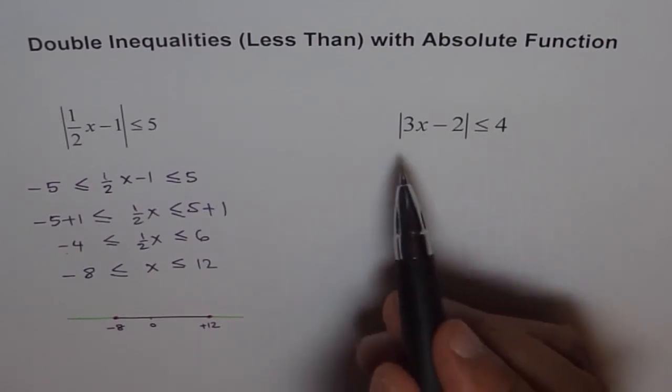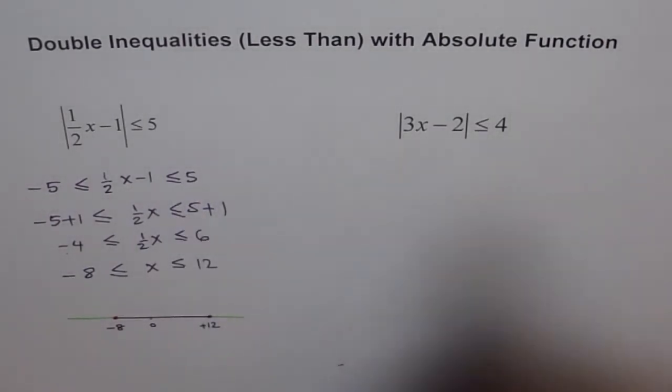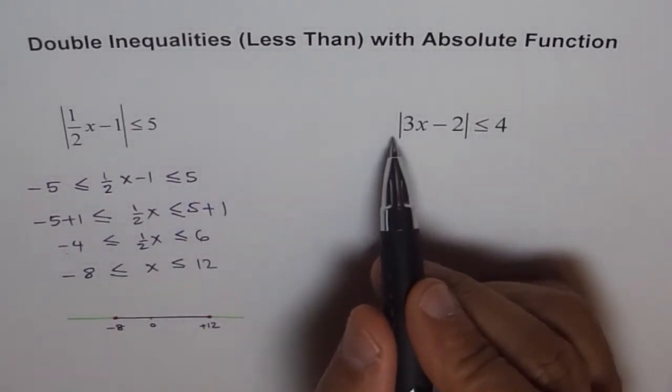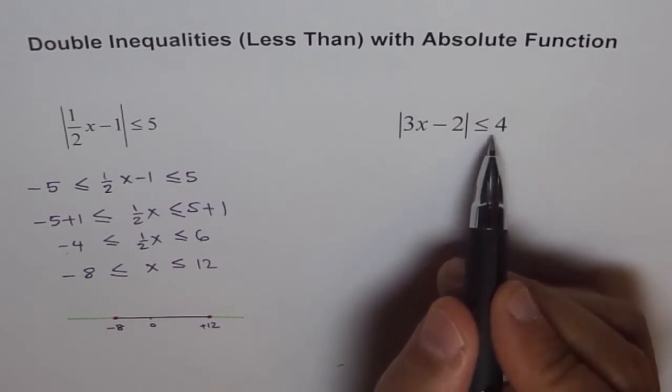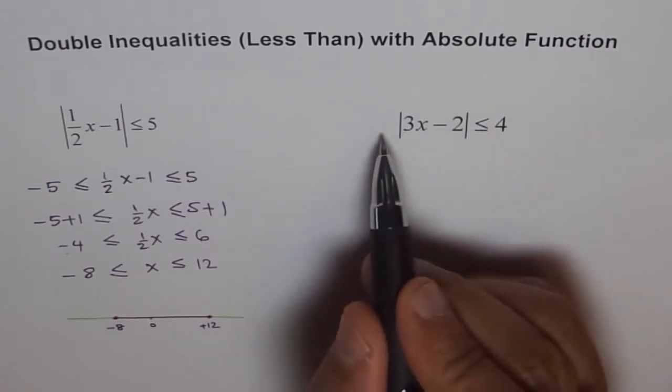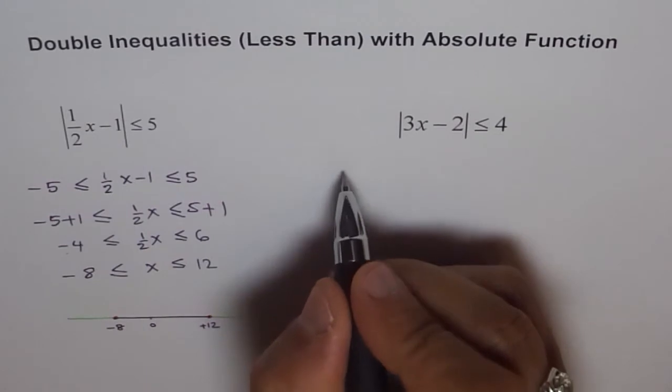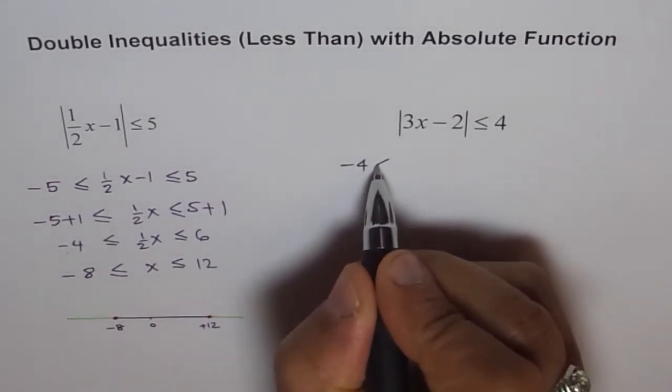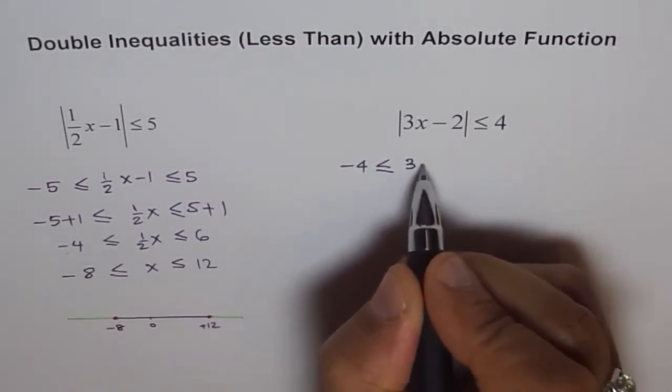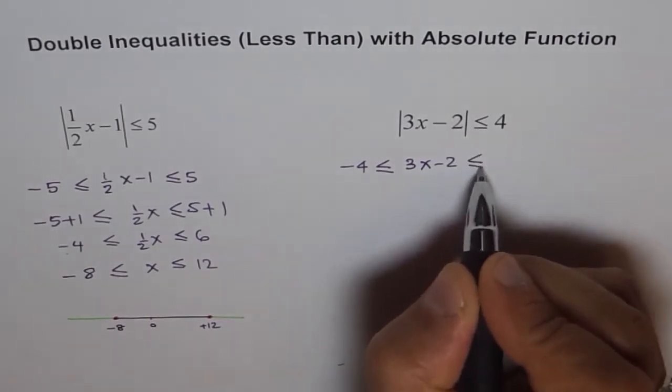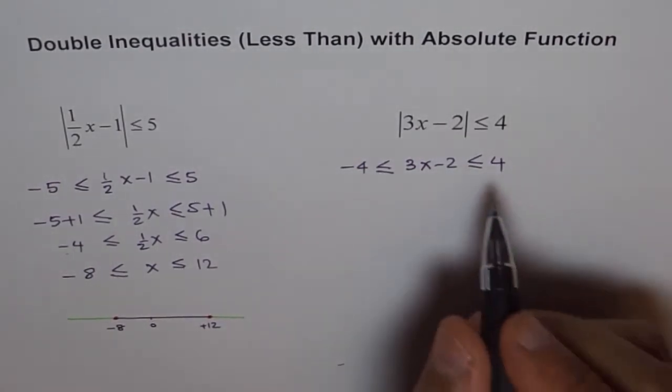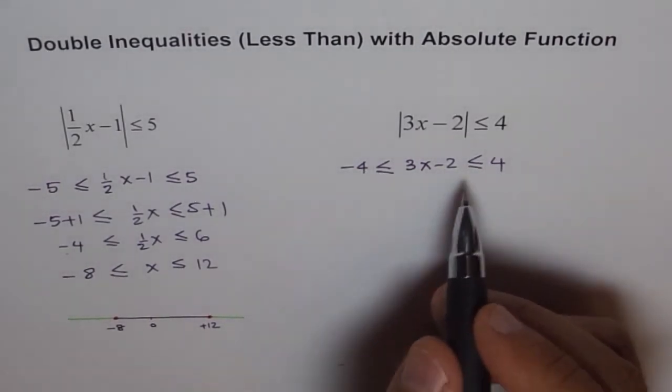Let's do one more. We will follow exactly the same process. When we say that this function is less than or equal to 4, that means it is within 4 and minus 4. Therefore, I can write this as within minus 4 and 4. So, 3x minus 2 is less than or equal to 4.